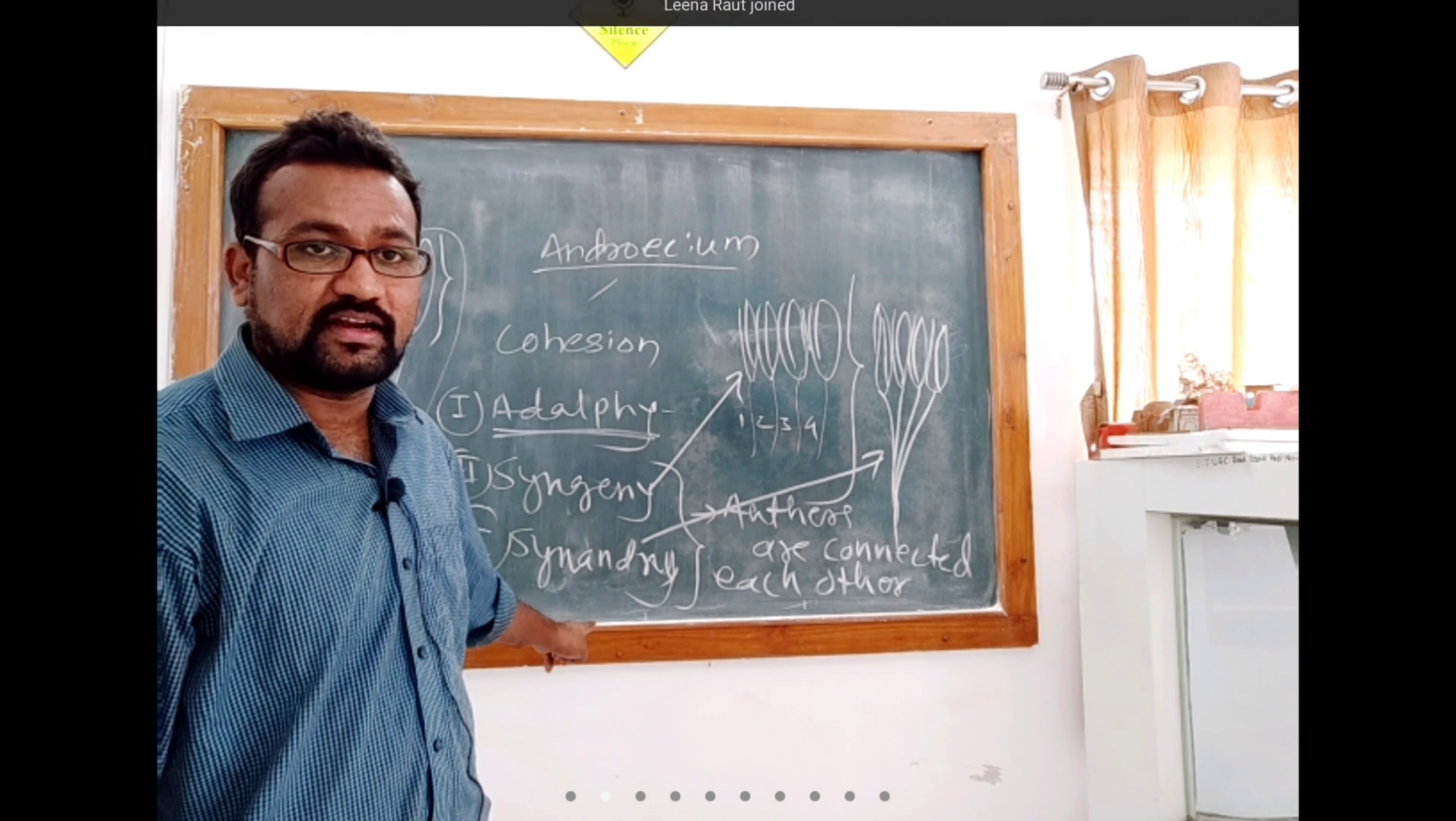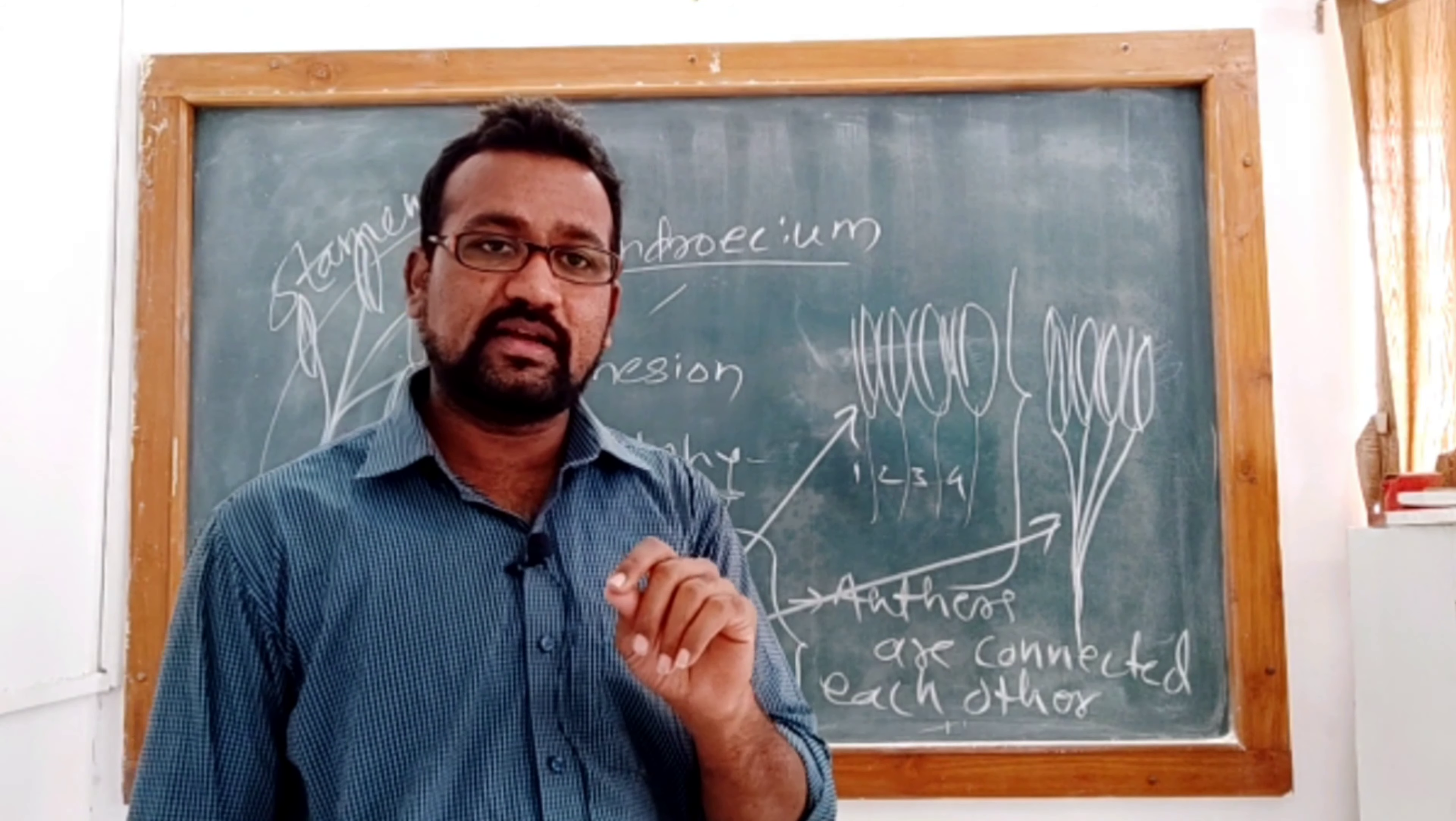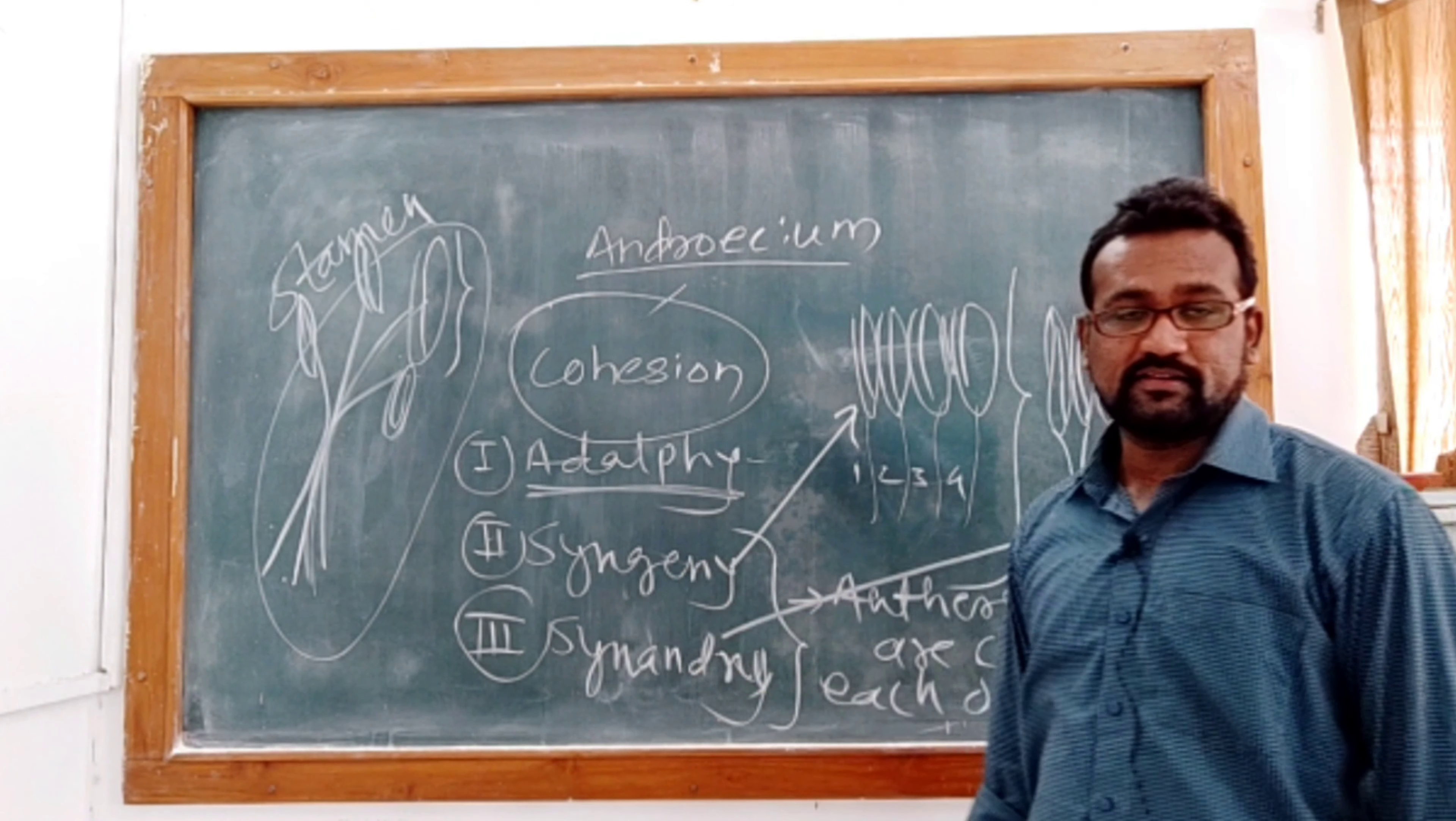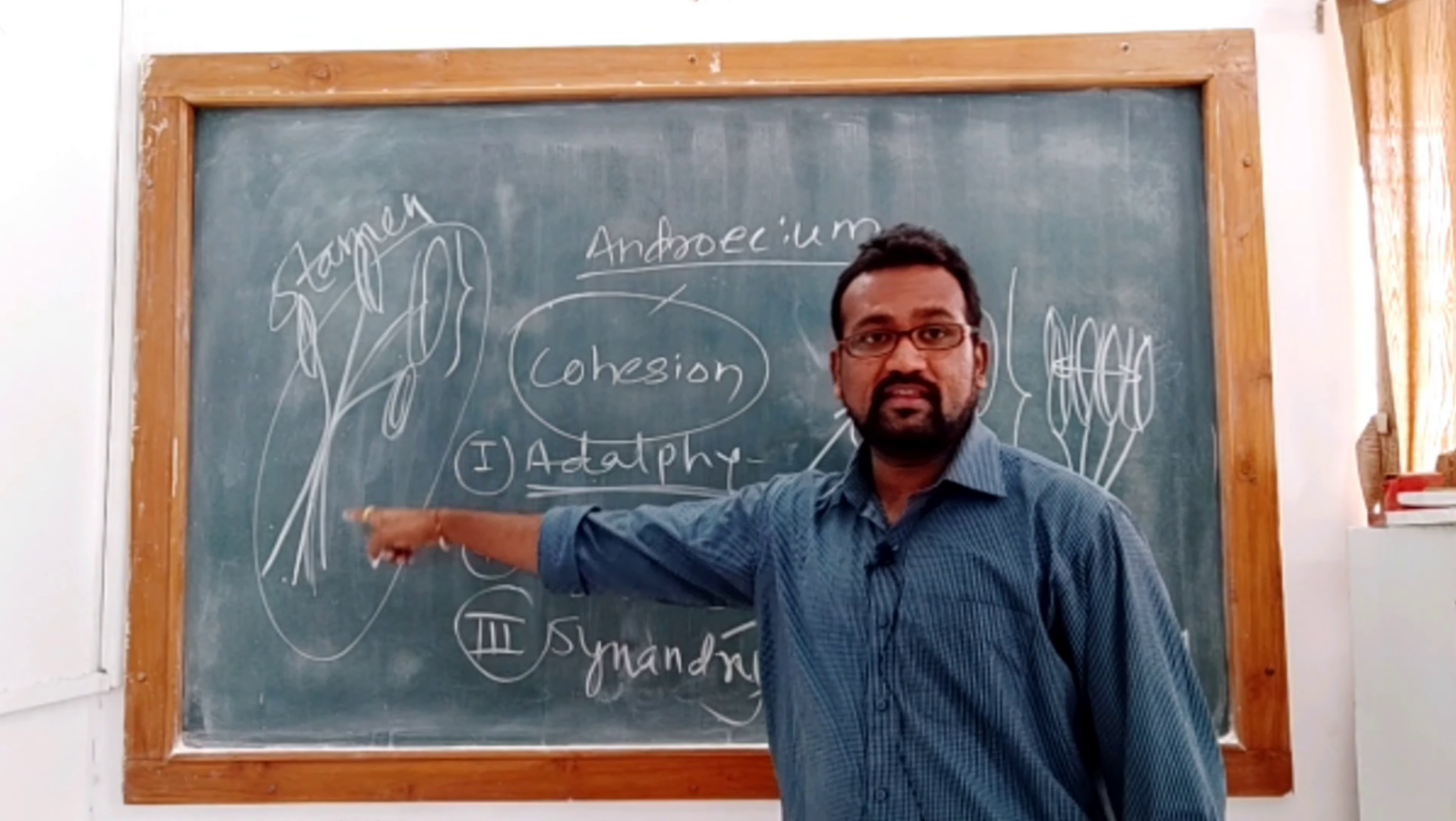Adelphi, Syngeny, and Synandry - three different types. You have to remember that. I will repeat it once again. We are studying about androecium. In androecium, there is a unit of androecium that is stamen. Each stamen contains two parts: filament at the base and at the top, the anther. There are three types. In case of cohesion, there are three types: Adelphi, Syngeny, and Synandry.